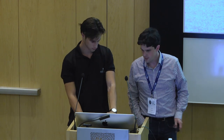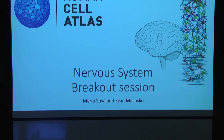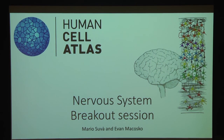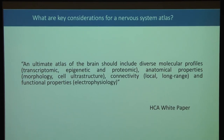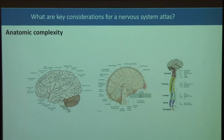Evan McCosco, with co-discussant Mario Suva, led discussion on the human nervous system. From the white paper, an atlas of the brain should define diverse molecular profiles integrating anatomical properties, connectivity, and functional properties — a challenging premise. A key consideration is the incredible anatomical complexity of the brain, far exceeding other tissues, with dramatic macroscopic complexity across forebrain, midbrain, hindbrain, and spinal cord.